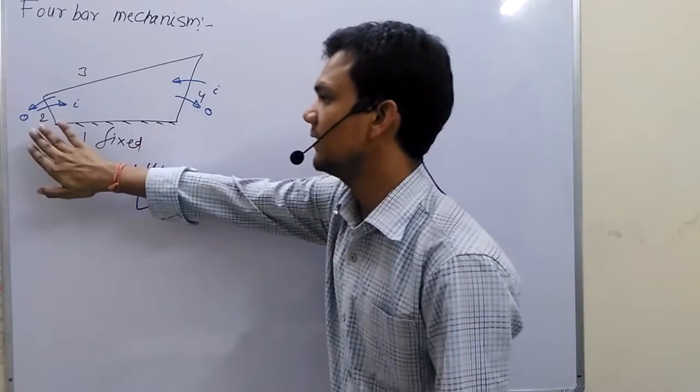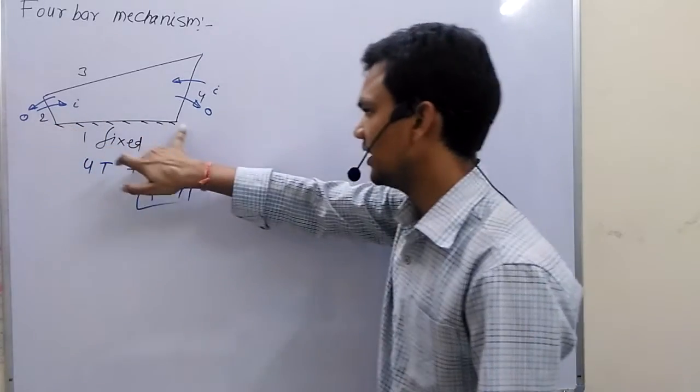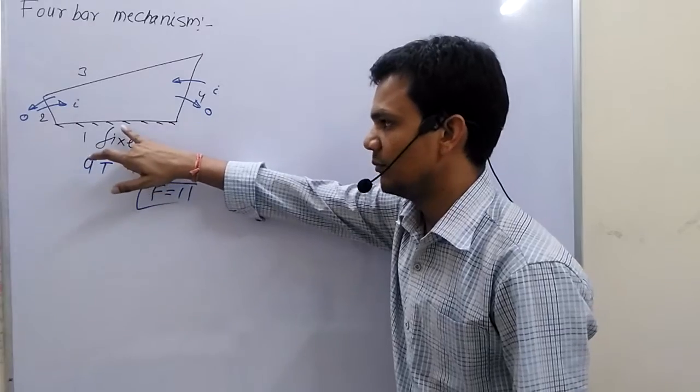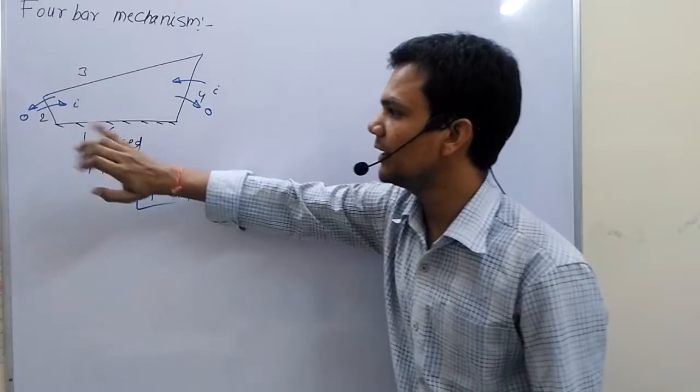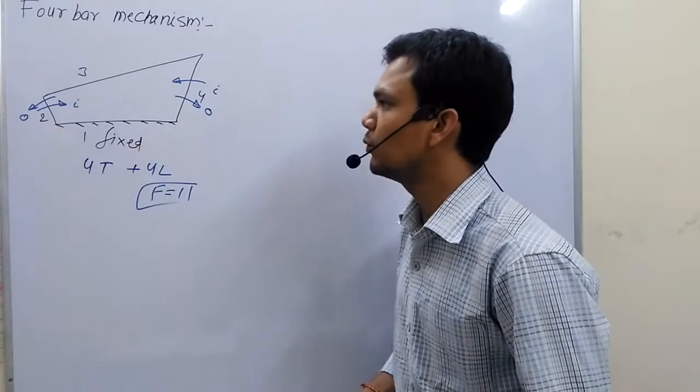Now, adjacent to fix link are input and output links. Fixed is the best position for 4 bar mechanism because it operates input and output both links.